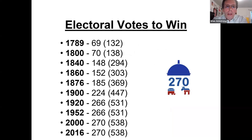Looking over time, in 1789 there were only 69 electoral votes needed to win. Today we have 270, and 270 has been the consistent number since the year 2000. You'll see on CNN and Fox talk about trying to reach 270 — that's the key number to be elected president.